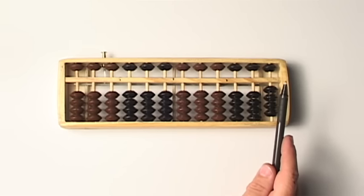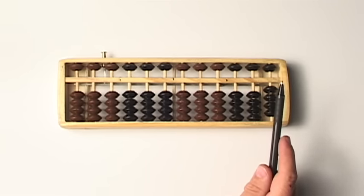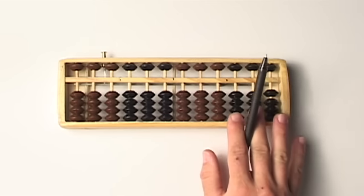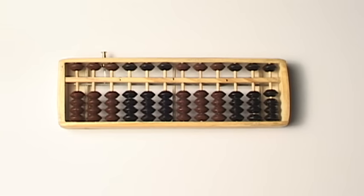You'll also notice that this abacus—not all of them will have this—changes colors every three beads. You can see this division of three. Think about how we write numbers—we always divide them into threes. If you write the number one hundred...